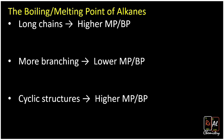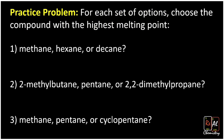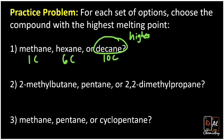Let's put these to use and practice a few problems. For each set of options, choose the compound with the highest melting point. First up: methane, hexane, or decane. Methane has one carbon, hexane has six carbons, and decane has 10 carbons. Recalling our first rule that longer chains have higher intermolecular forces, decane has the highest melting point.